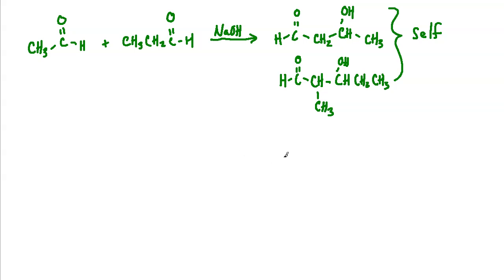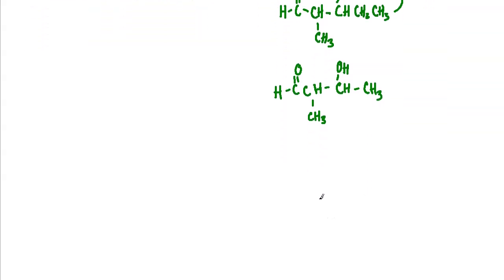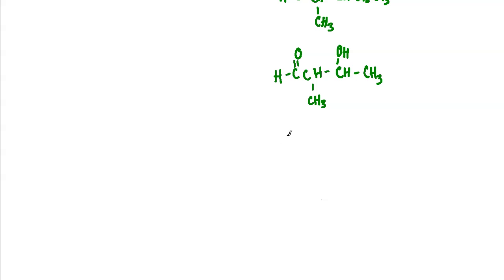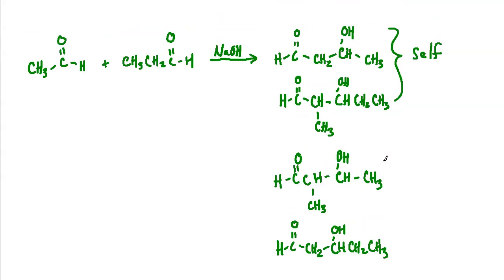The other two that we would get would be if we created an enolate from the propanal, and that attacks the acetaldehyde. And so we would get CH-OH, CH3-CH3. And then finally, the last one would be if we had the acetaldehyde once again being an enolate, and this time the acetaldehyde attacked the propanal. That's the one that we were working with to begin with, where we've got the CH-OH and the ethyl group here. So those would be the four possibilities. The top two would be self, and then these two would be the mixed results that we would get.